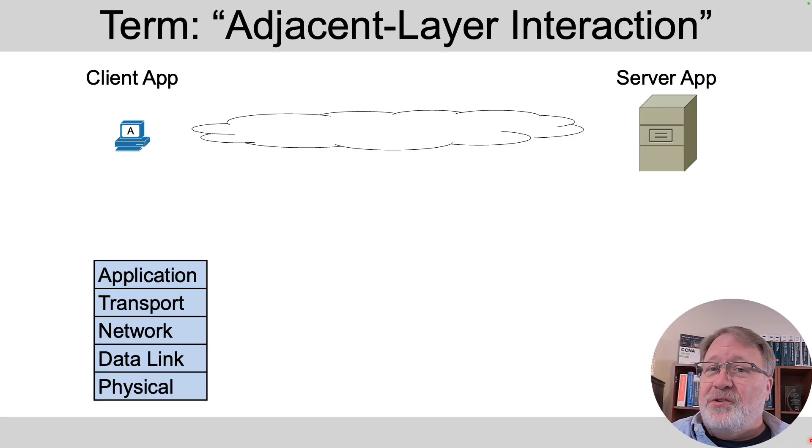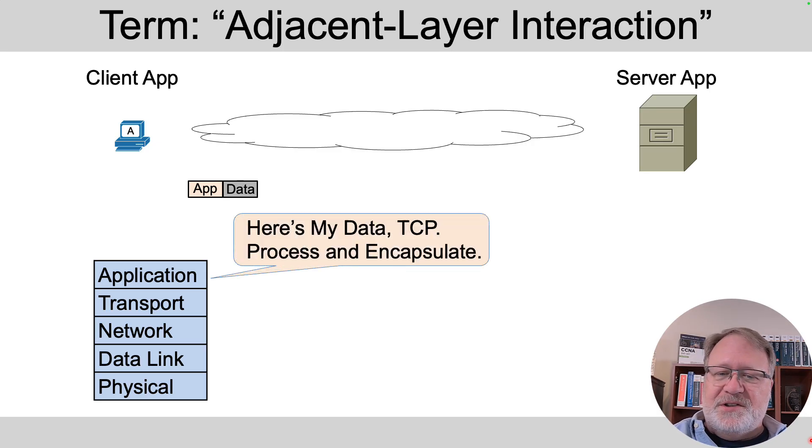Next, I want to introduce you to a couple of other related terms that maybe aren't very often used anymore, but just in case, I want to introduce them. I'm going to repeat those same flows with encapsulation and de-encapsulation, the same exact example, and introduce the term. So the app here on host A creates some data, adds that application layer header. When the application layer code asks the transport layer to do its job, it's doing logic like this: here's my data, TCP, please process it and encapsulate it. That's a case where one layer, the app layer, is interacting with the transport layer, and there's an old term for that called adjacent layer interaction.